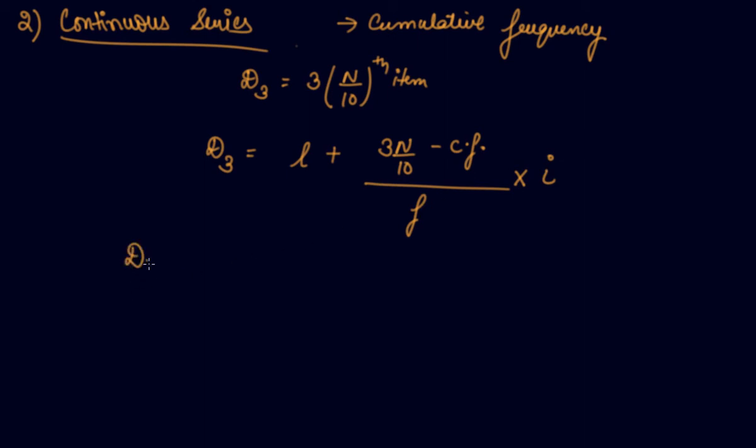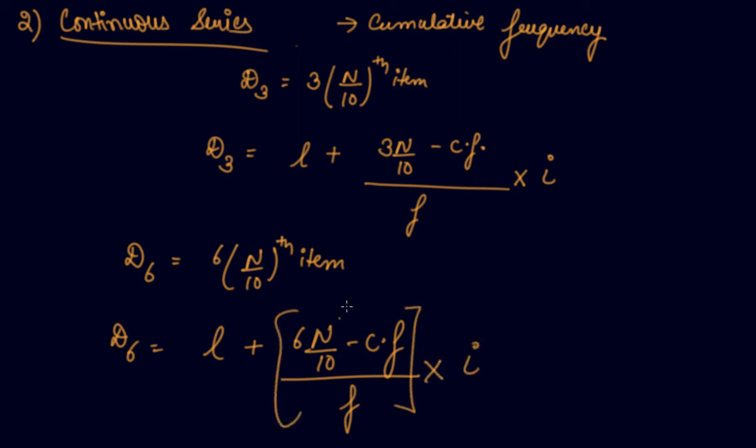If you have to find out the deciles 6, same way, 6 n by 10th item, deciles 6 is lower limit of the deciles class plus 6 n by 10 minus cumulative frequency divided by frequency of the deciles class into i. This is how you can find out any deciles they want by multiplying it simply here.